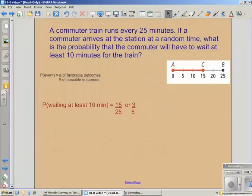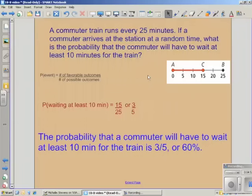To write the equation, the probability of waiting at least ten minutes would be fifteen over twenty-five or simplified to three over five. So the probability that a commuter will have to wait at least ten minutes for the train is three-fifths or sixty percent.